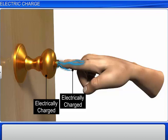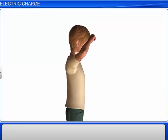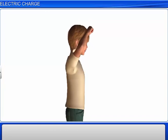We know that when a comb is rubbed against dry hair, it begins to attract small pieces of paper.